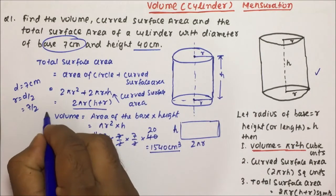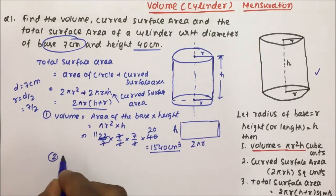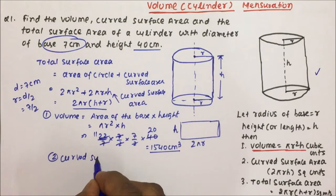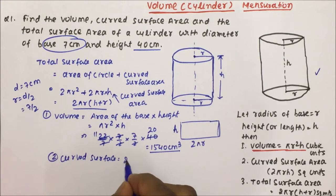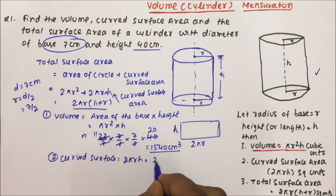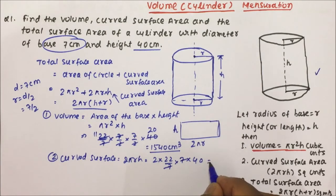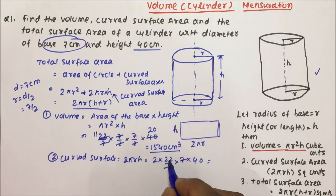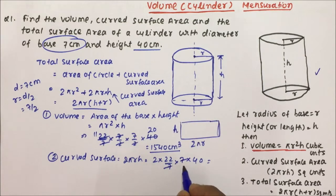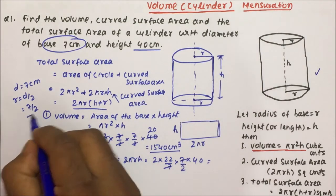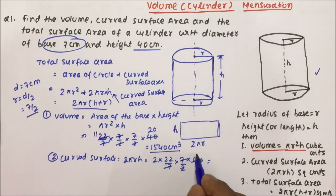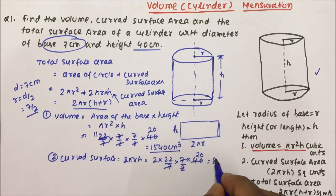Now what is the curved surface area? The curved surface area is 2πrh. So: 2 × (22/7) × (7/2) × 40. The 7s cancel and the 2s cancel, giving 22 × 40 = 880. So the curved surface area is 880 cm².